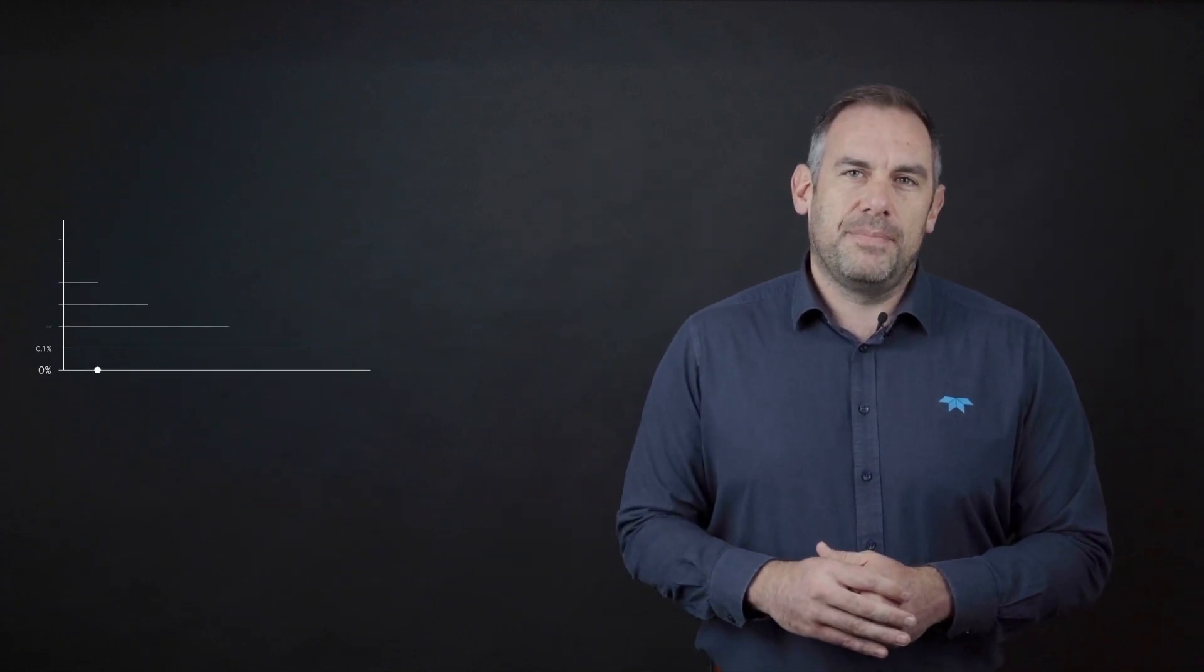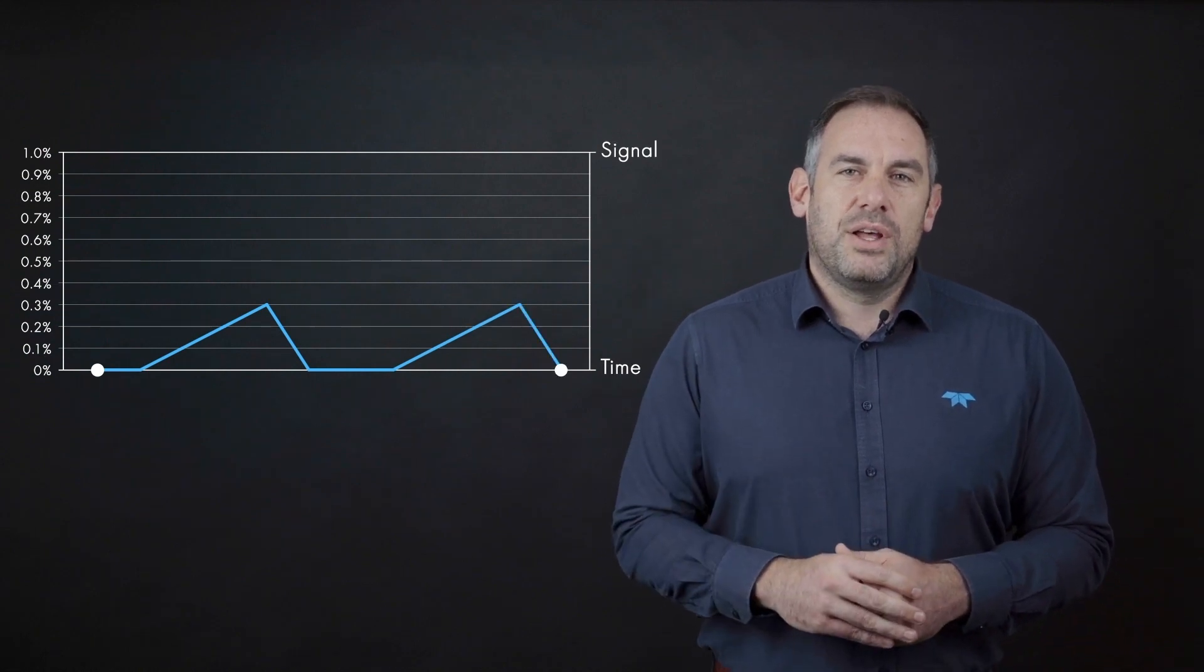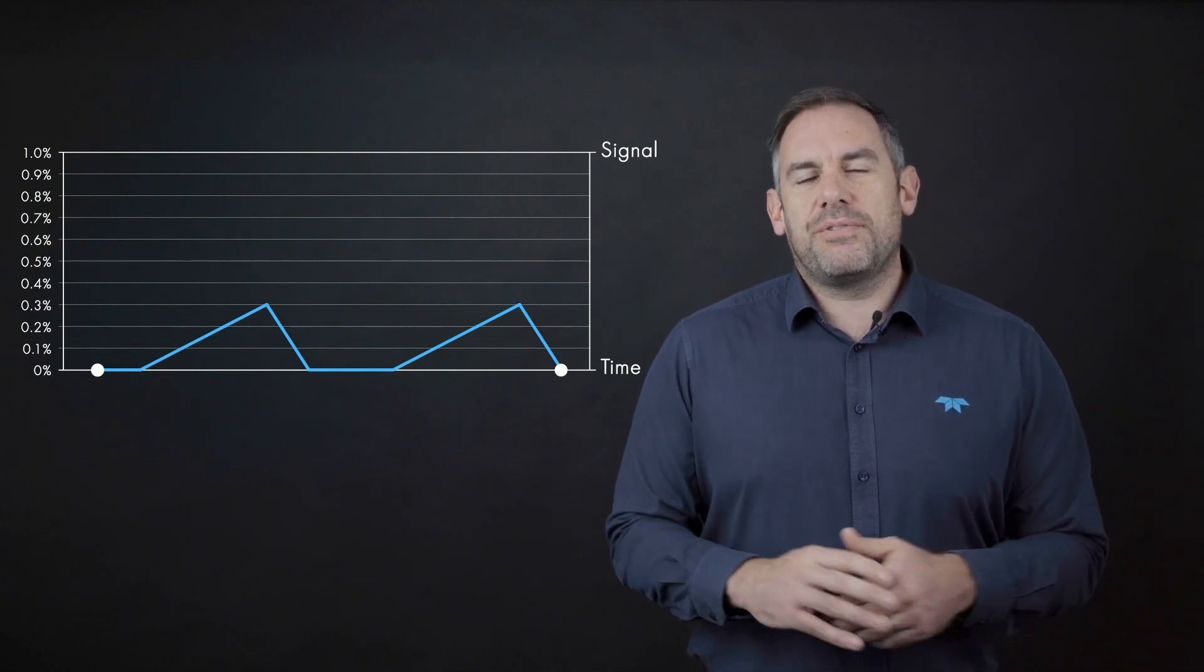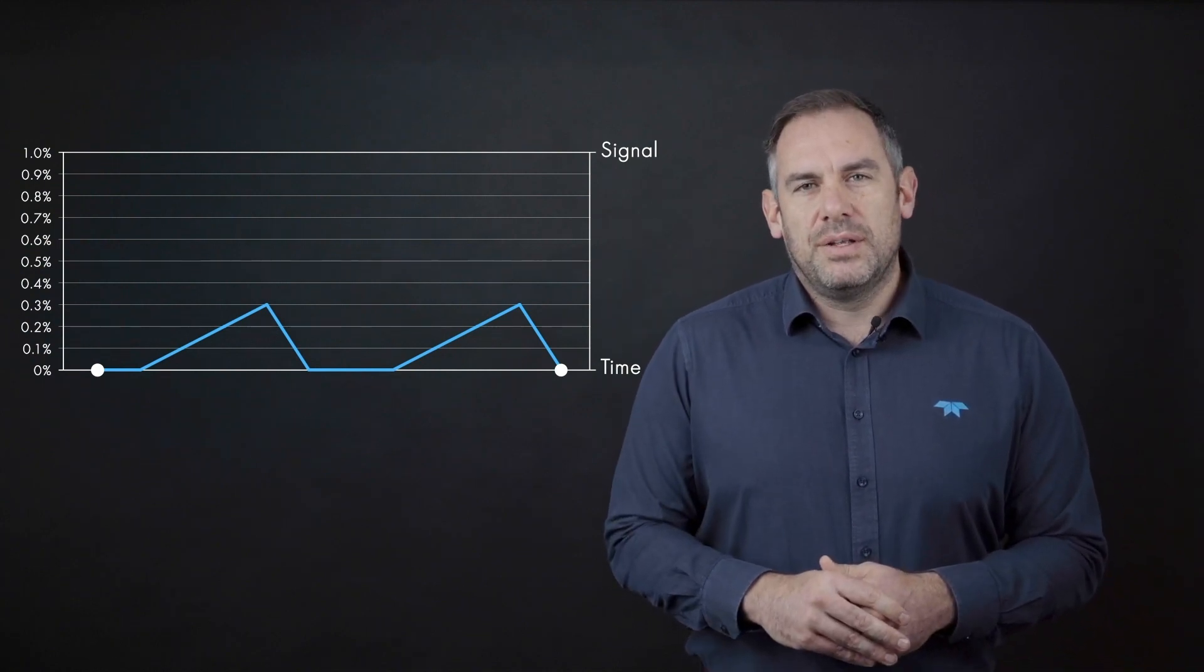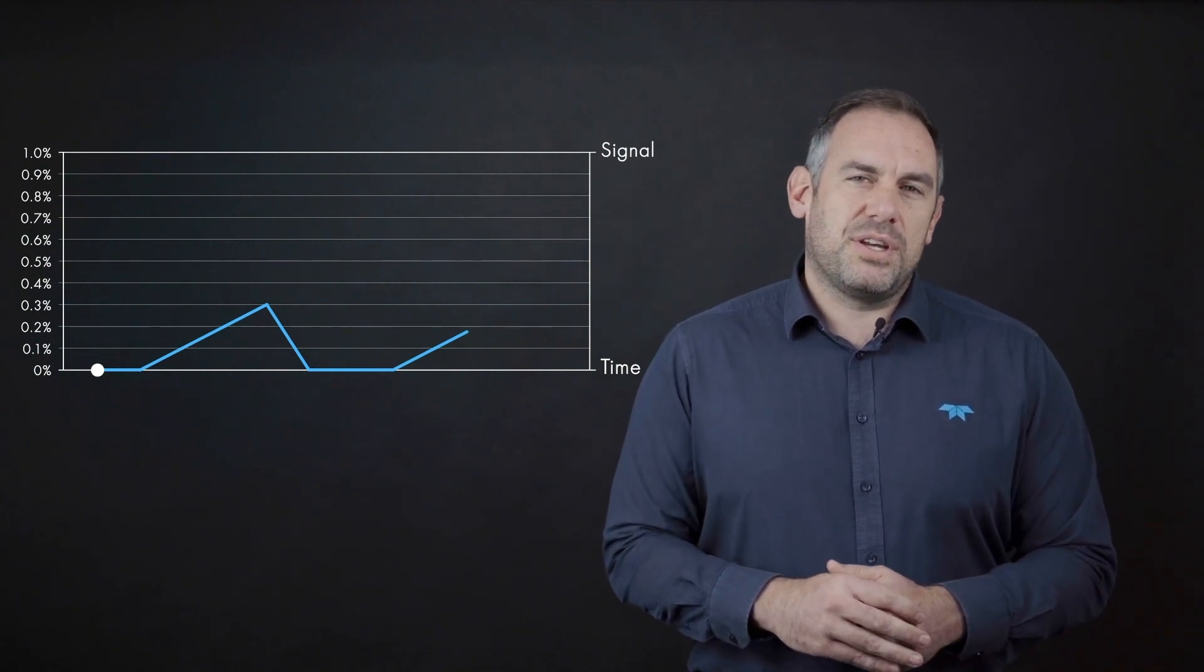In many applications, dirt and contamination will build up over time. But using the information of the absorption of the reference beam, the devices are able to readjust the zero drift that will occur in the presence of contamination. This self re-zeroing of the device will reduce the amount of false alarms and also the frequency of service interventions.